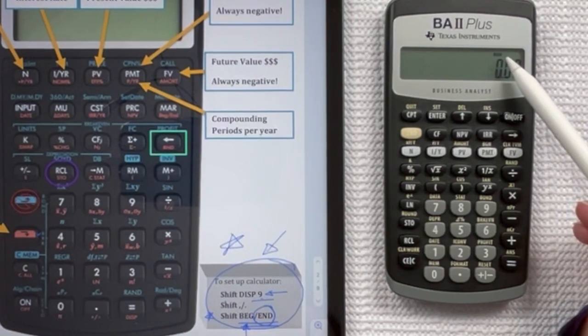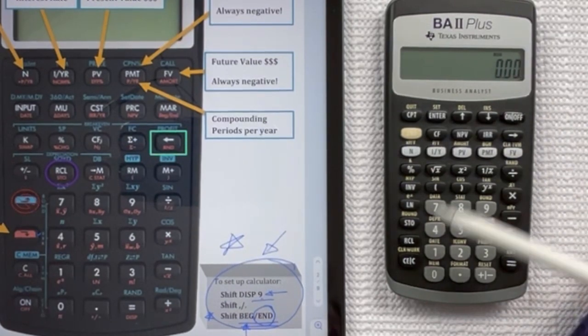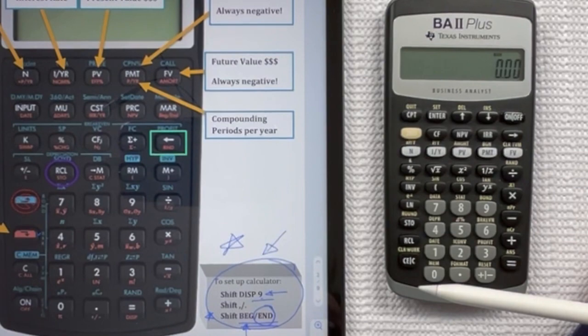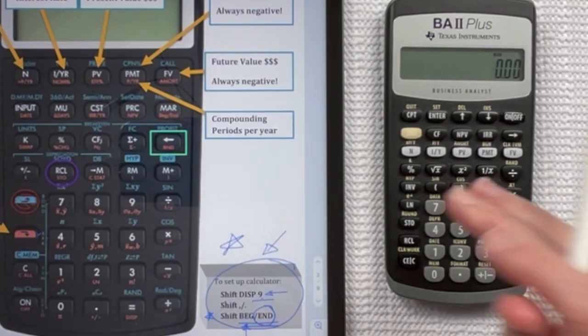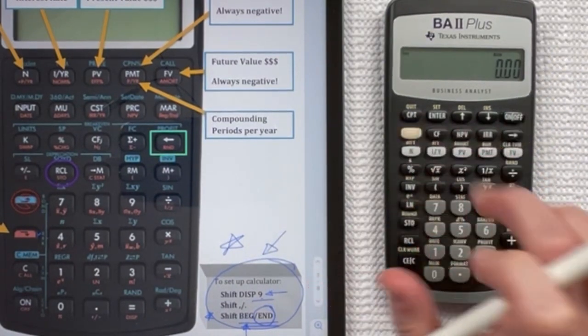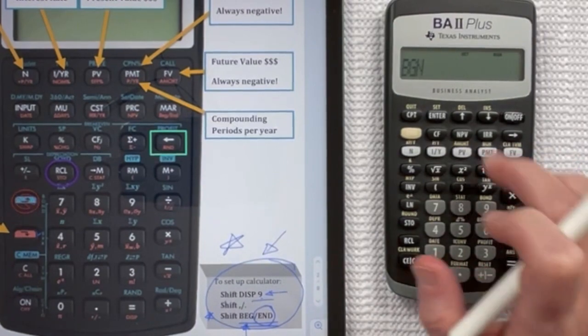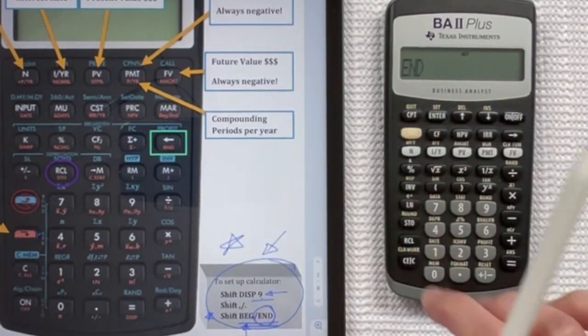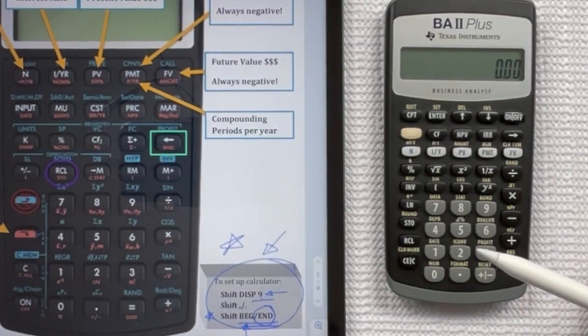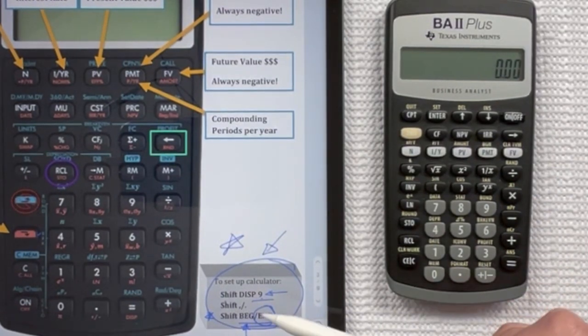So if I exit this, you'll see BGN is actually on your display and you don't want that. You want it to be in END mode. So you're going to do the same thing to get out of there. You're going to hit the second function and BGN and then second function and SET. And you see that it got rid of the BGN that was on the display. So that's the first one.